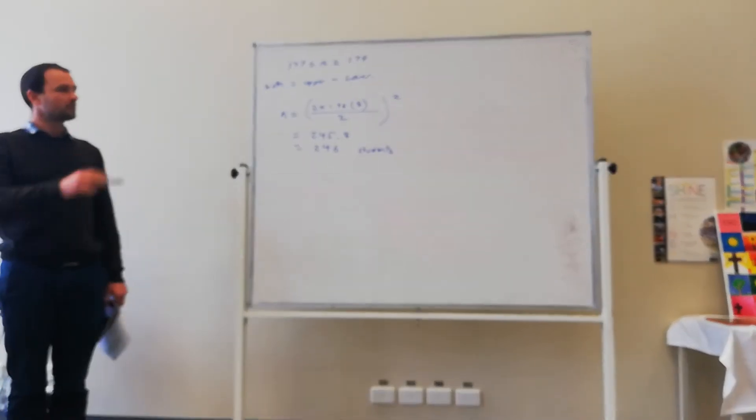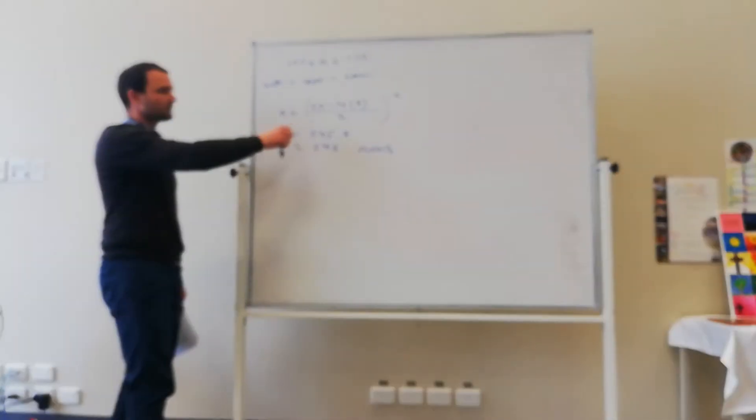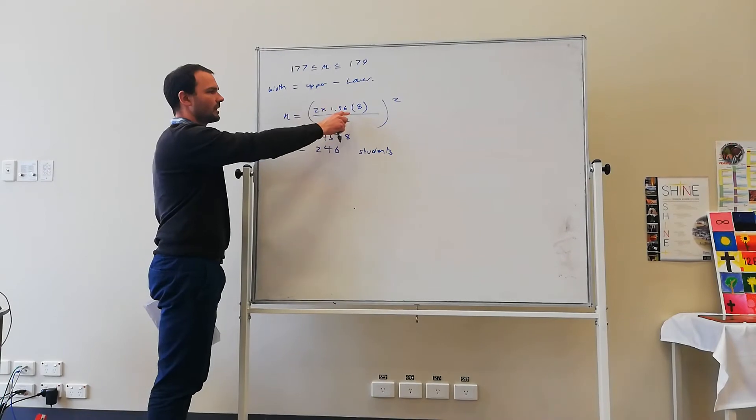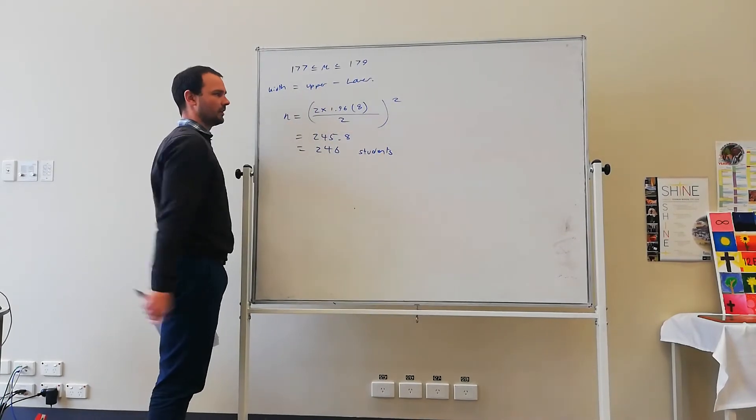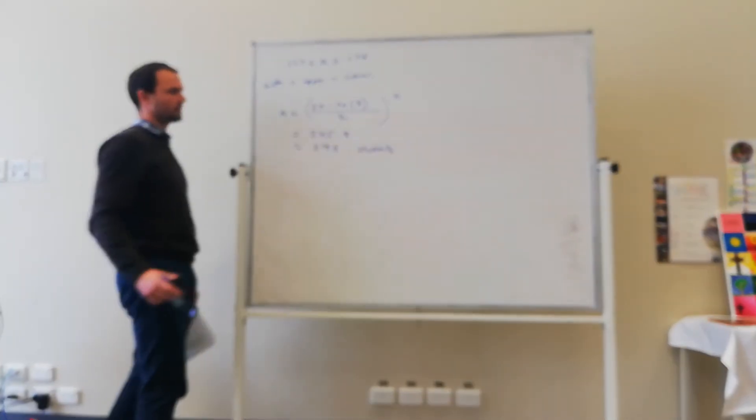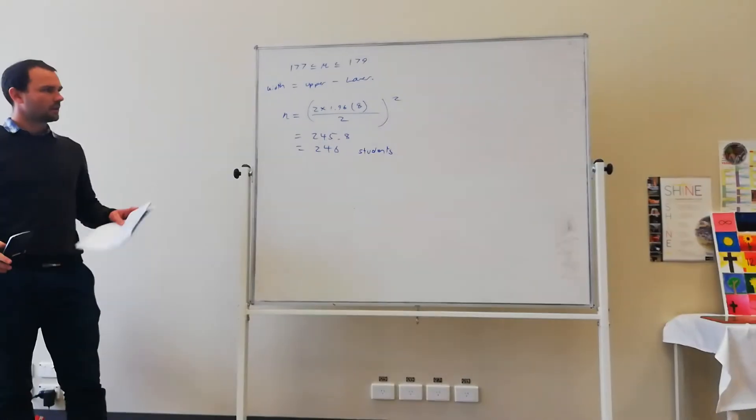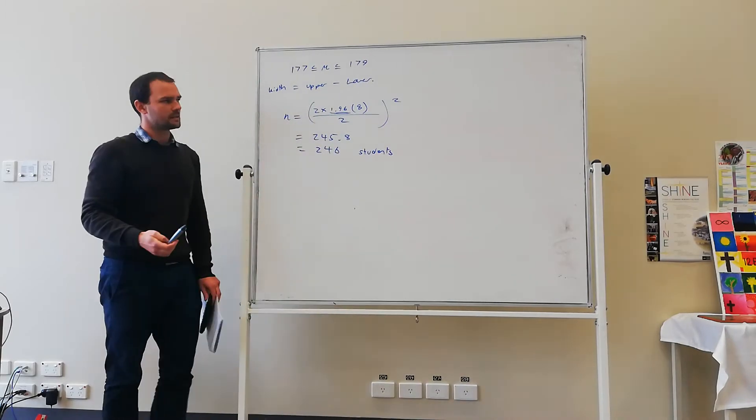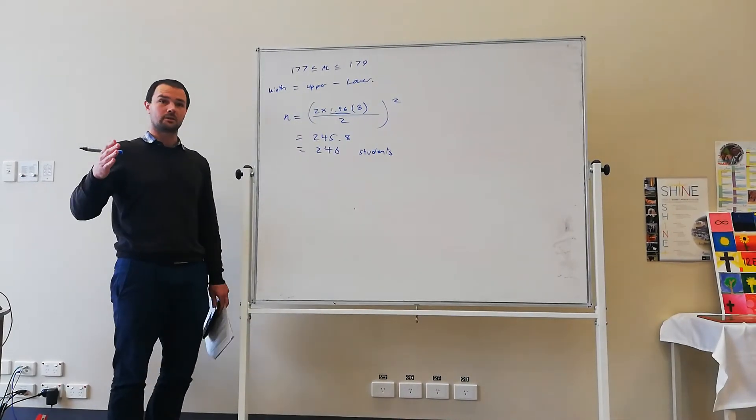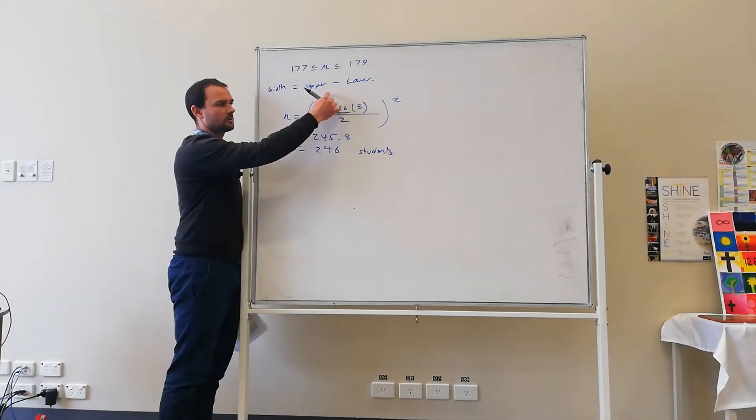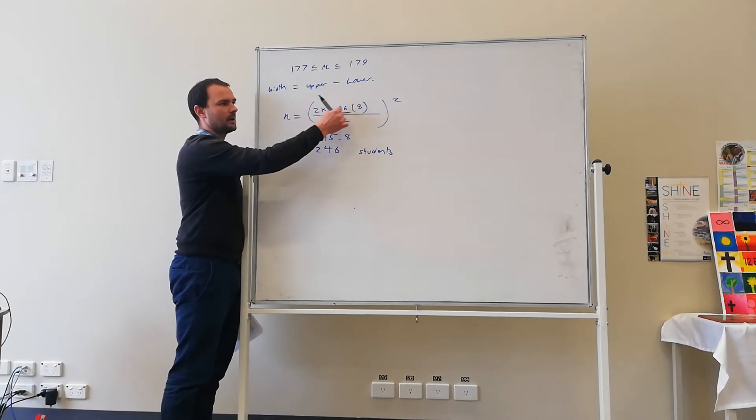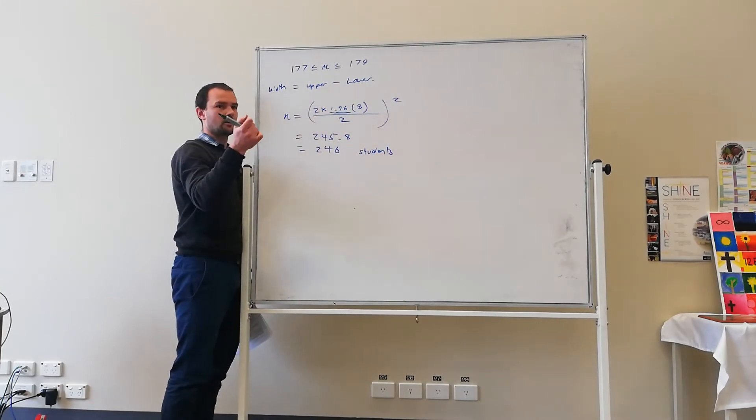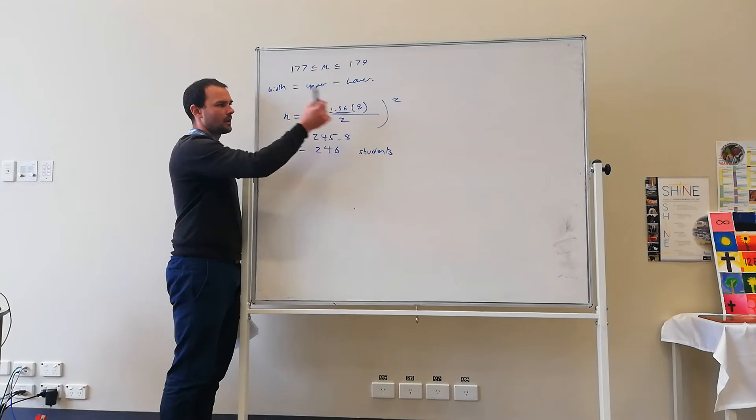Now what I want you to point out about this formula here is the mean isn't featured anywhere. It only depends on the standard deviation and spread of the data. And obviously here we've got 1.96. Remember that's our value of Z alpha on 2 for 95% confidence interval. That could change depending on the level of confidence we're talking about. I think in the textbook it's only 95% confidence interval.